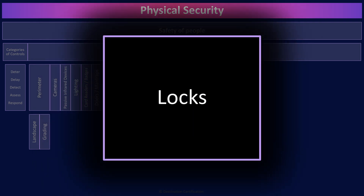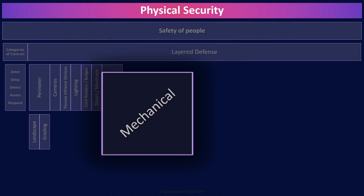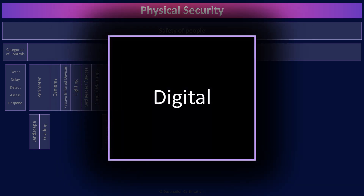Locks are a perfect example of a delay control in physical security. It is just a matter of time before an attacker picks, forces, or breaks a lock and gains entry — check out the Lockpicking Lawyer on YouTube if you don't believe me. Because locks are considered delay controls, they should never be implemented in isolation. We always want layered security or defense in depth. There are loads of different types of locks. Broad categories include mechanical locks — for example, key locks, mechanical combination locks, and magnetic locks — and a second broad category, electronic locks: proximity or RFID cards, electronic combination locks, and biometric locks.